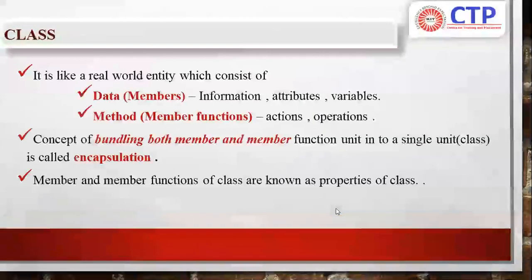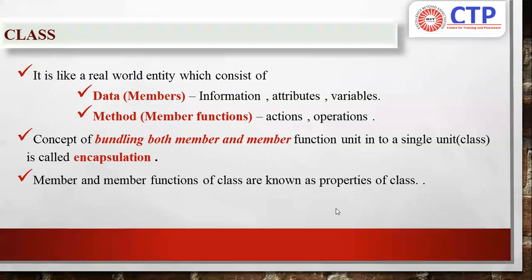Now let me see what is a class. A class is like a real world entity — it is a grouping of information. What kind of information? You are grouping data and its functionalities. The data can be information about a person or a thing — its attributes, variables, etc. Methods are the actions, operations, or functionalities. It is the concept of bundling both member data and member functions into a single unit, and that single unit is called a class. The process of achieving it is called encapsulation.